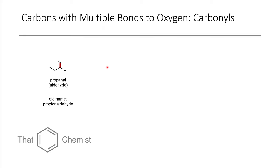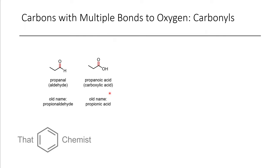Moving forward to compounds with multiple bonds: there's a class called carbonyl-containing compounds. Carbonyls are carbon double bond oxygen and they form some of the most significant molecules in organic synthesis. Here we have an aldehyde — this is propanal. Here we have a carboxylic acid: instead of a hydrogen on the carbonyl, we have an OH group connected directly to the carbonyl — this is propanoic acid, or the old name propionic acid. If we put a carbon on that oxygen instead of an OH, we have an ester — methylpropanoate or methylpropionate. Esters are very nice-smelling compounds and also good solvents.